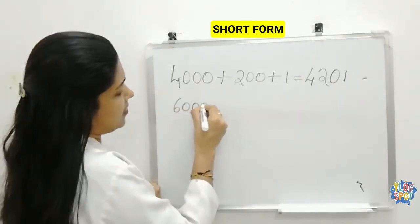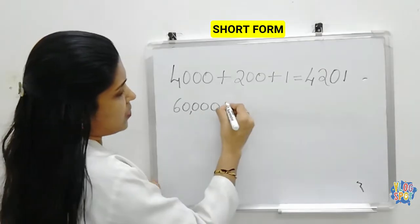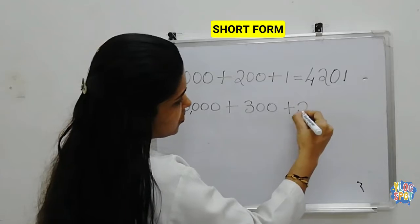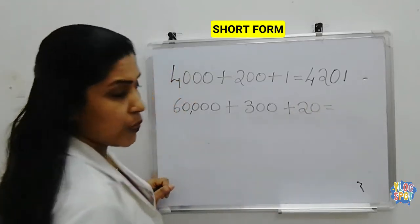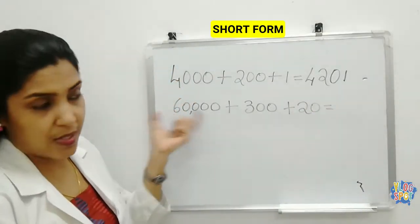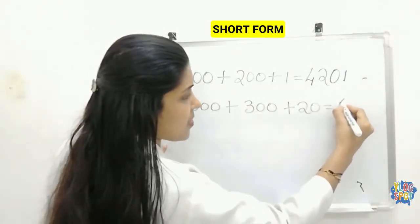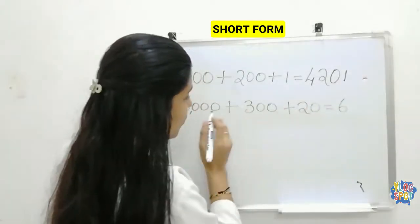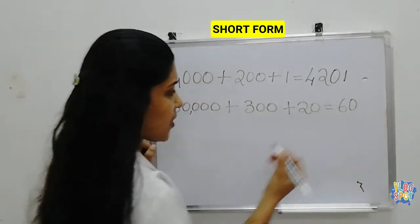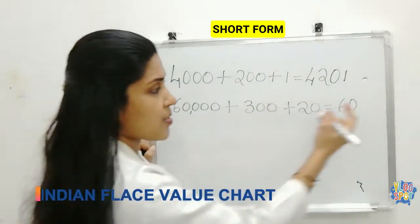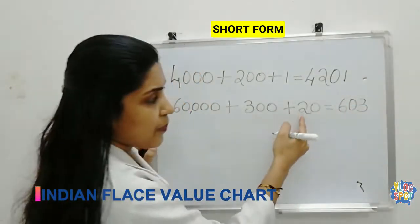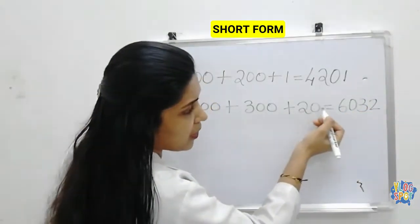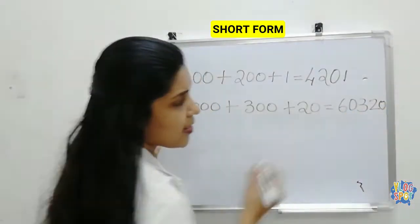Another example: 60,000 plus 300 plus 20. So 6 is in the ten-thousands place. There is no thousands place here, so you keep 0 in the thousands place. Then 300 means 3 is in the hundreds place. 20 means 2 is in the tens place. And there is no number in the ones place, so that is again 0. The short form is 60,320.